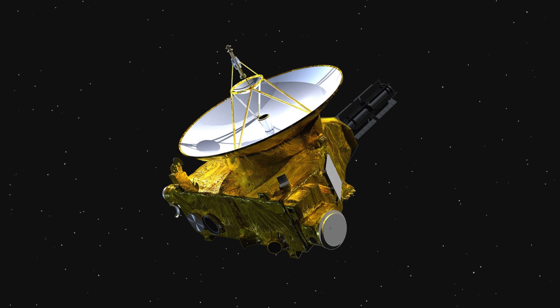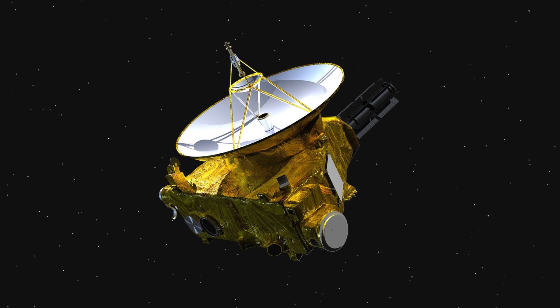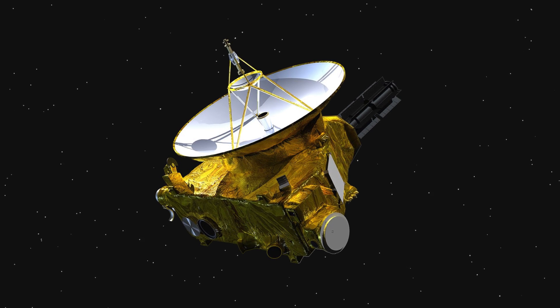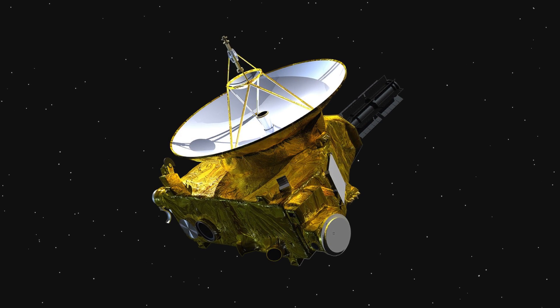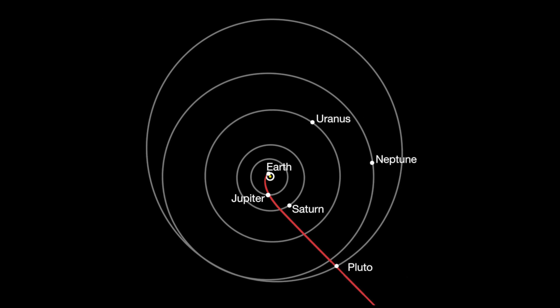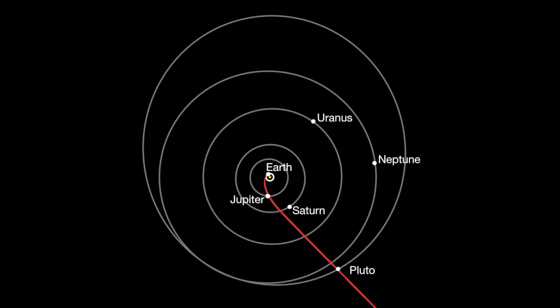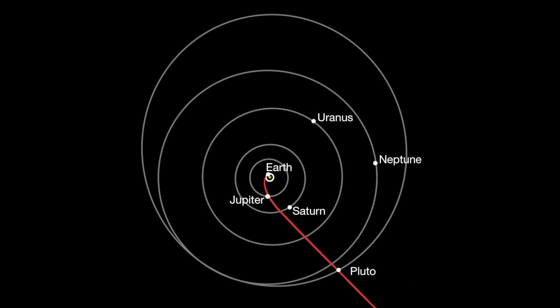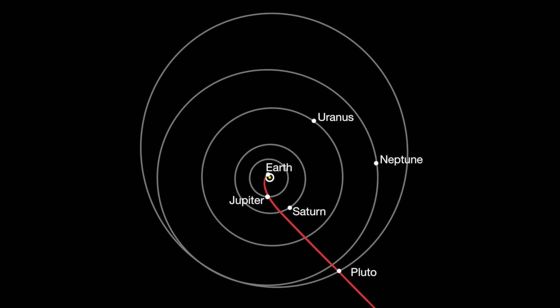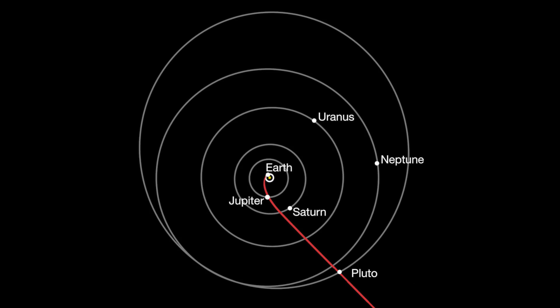Newton's ideas are still applicable even three and a half centuries later. For instance, NASA used Newton's law of gravity to shoot the New Horizons space probe to Pluto, traveling 3.26 billion miles over nine and a half years and hit a target ten miles across. That's impressive.